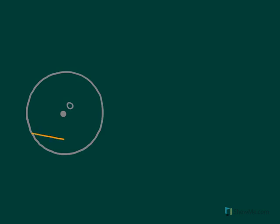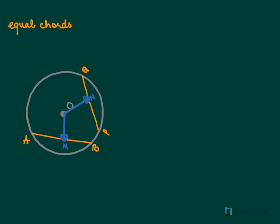Here we have a circle with center O and two equal chords: chord AB and chord PQ. Since these chords are equal, I can say the distances from the center are also equal. I draw the distance from O to AB — it is perpendicular. So this distance M will equal this distance N. If chords are equal, the distances are also equal. Equal chords are equidistant.